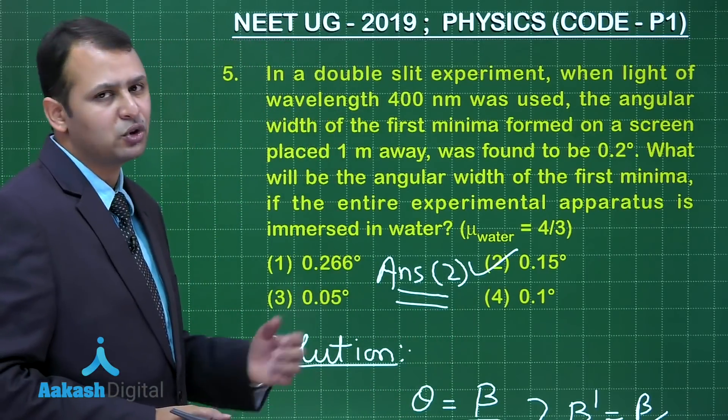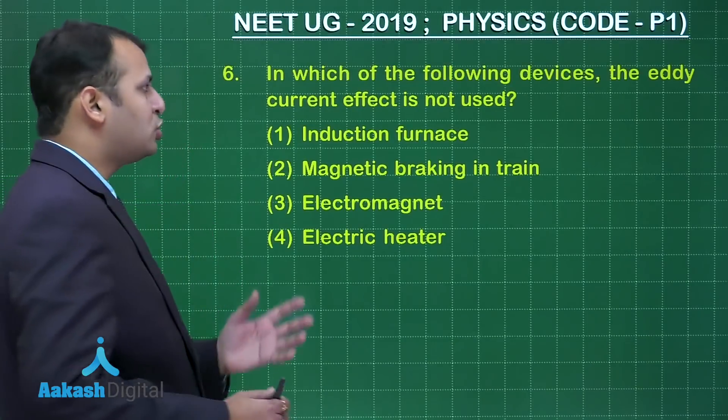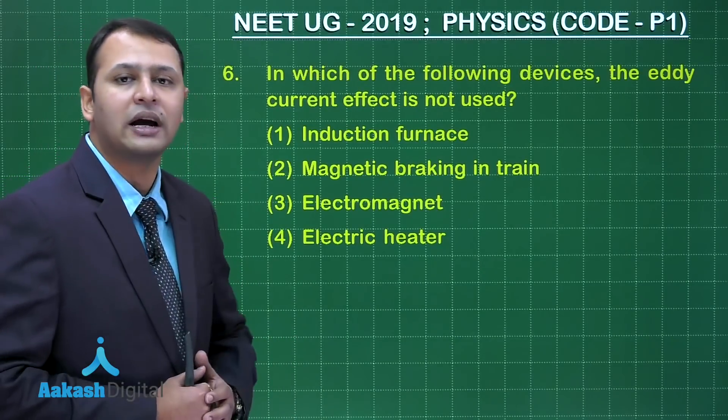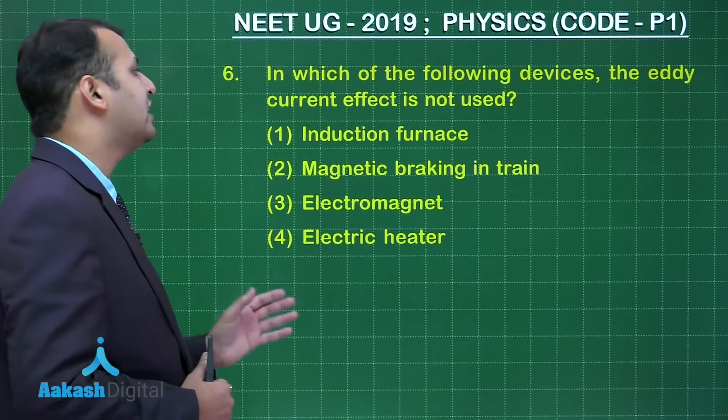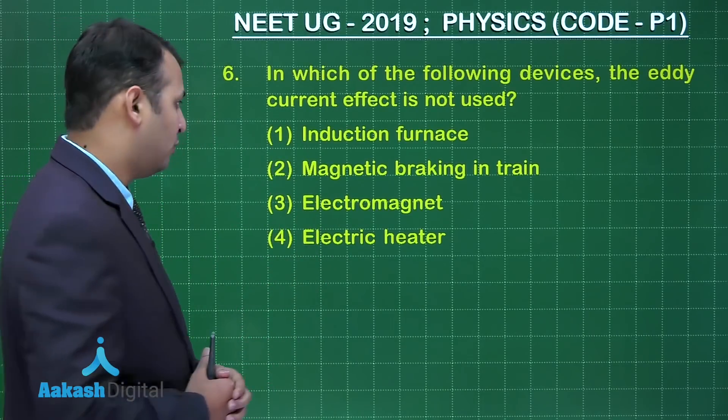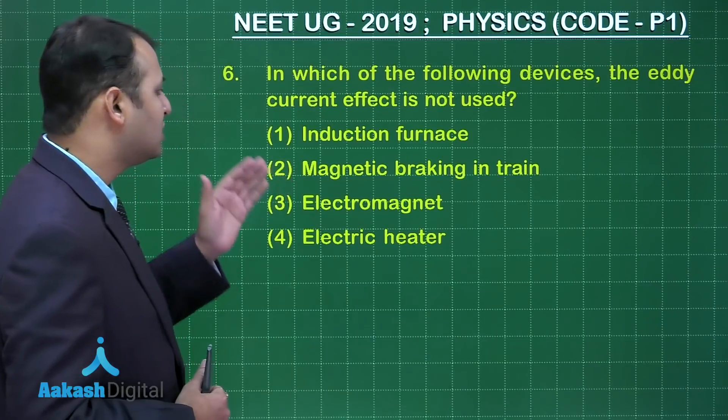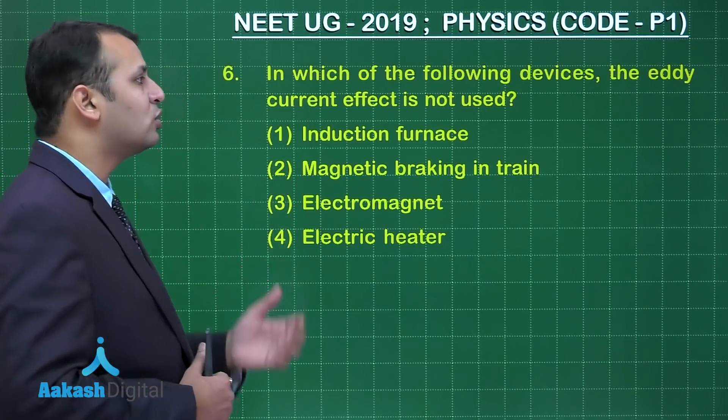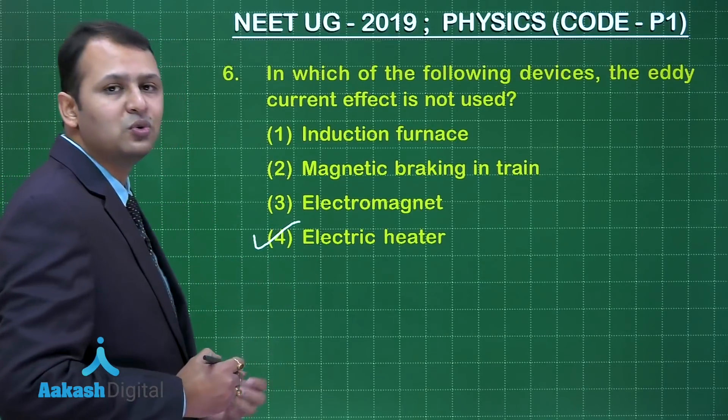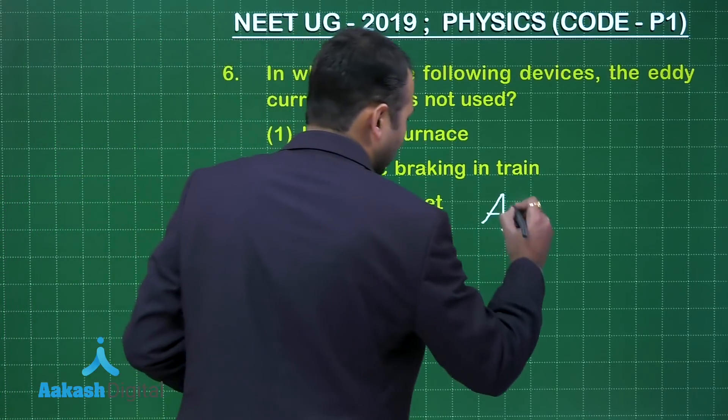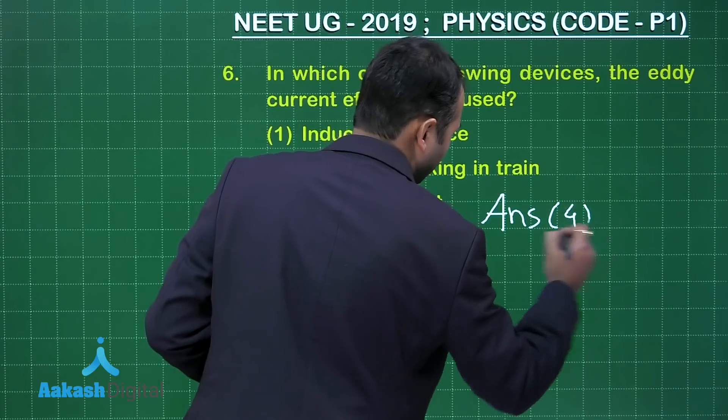Now let's move on to our next question, that is question number 6. So the question you see belongs to chapter electromagnetic induction. From this question: in which of the following devices the eddy current effect is not used? Obviously the induction furnace, magnetic braking in train, and electromagnet involve the concept of eddy currents. The fourth option, that is electric heater, does not use the concept of eddy current. So answer to this question would be option number 4.